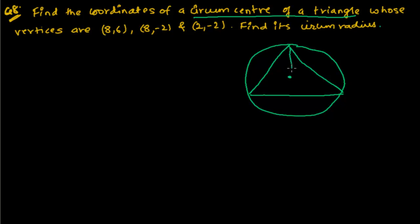The circumcenter is that point whose distance from all the vertices of the triangle is always equal. This distance equals this distance equals this distance. Now we have to find the coordinates of this point — suppose it is (x, y).